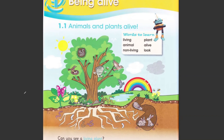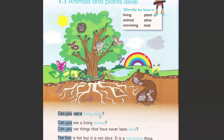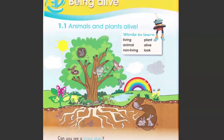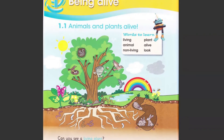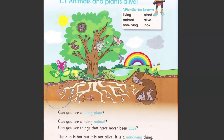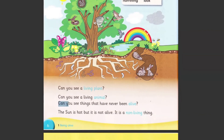Let's go down and see the questions. Our first question is: can you see a living plant? Looking at the image — you might think the tree is a living plant, and you are kind of right, but the specific living plant shown is this one here. The second question is: can you see a living animal? There are a lot of animals — a frog, a rabbit, worms, a sparrow, a pigeon. Yes, we can see them!